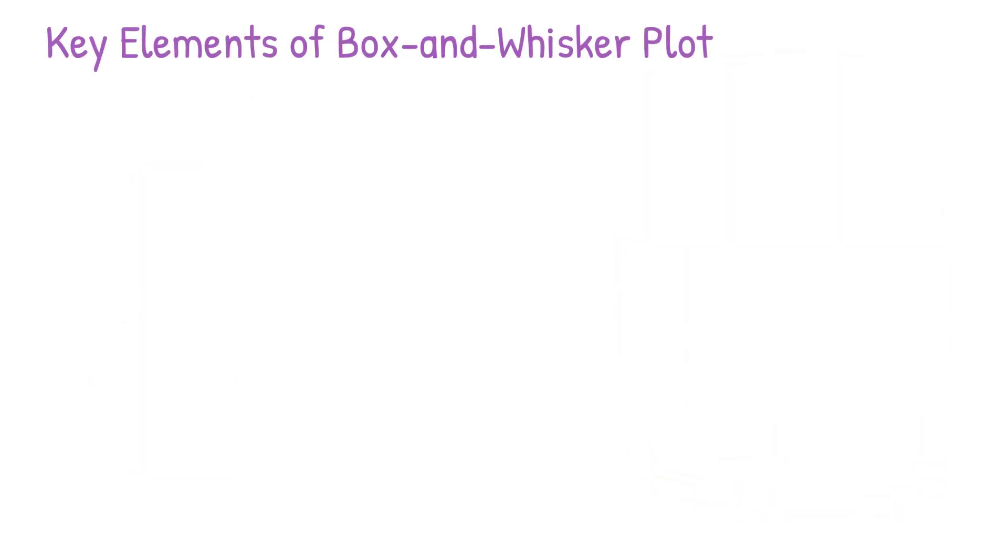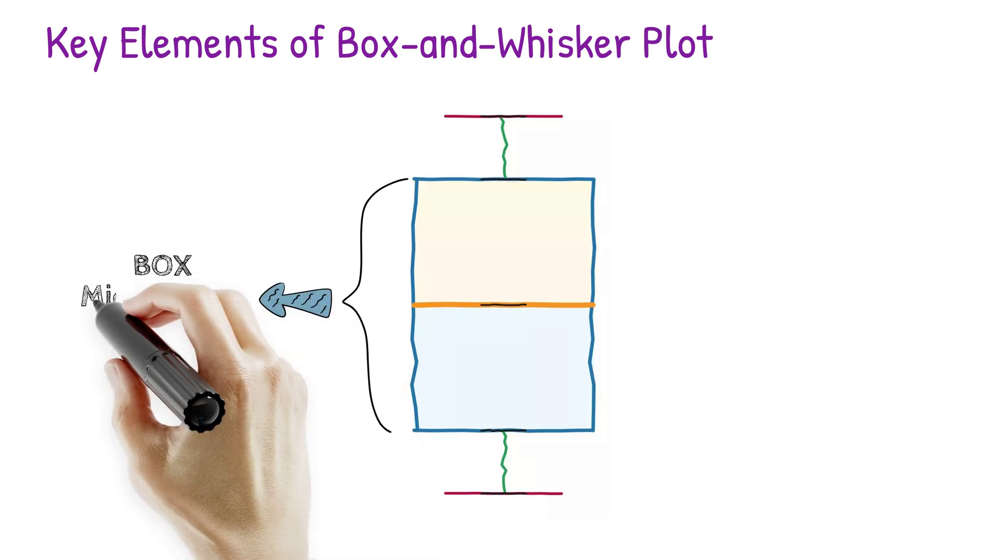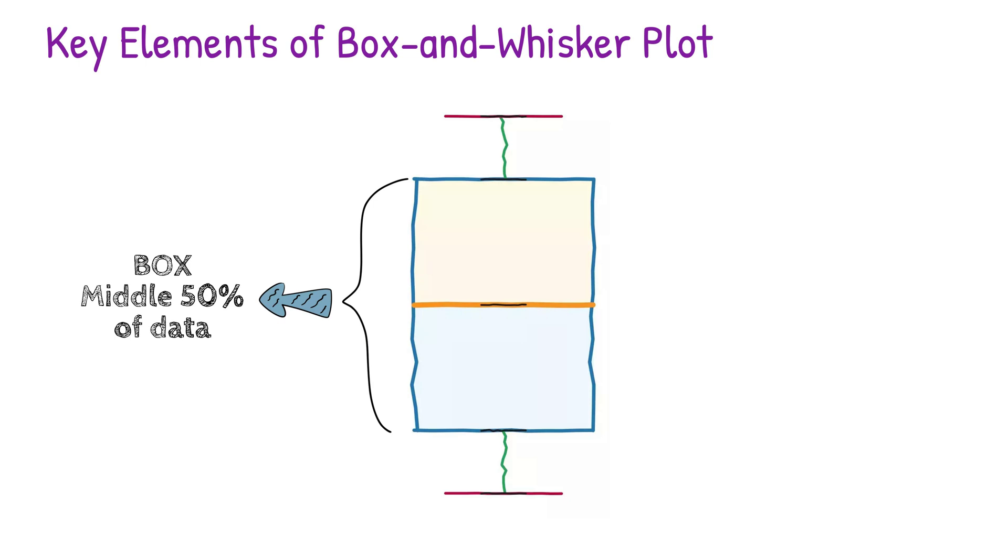Let's break down the basics of a box plot. The box represents the interquartile range from the first quartile to the third quartile. This is where the middle 50% of your data lies.